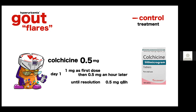For colchicine in a flare: on day one, start with two tablets of 0.5mg as the first dose. If one hour later the patient still has pain, they can take a third tablet. After that, prescribe 0.5mg (one tablet) eight-hourly until the flare resolves, which usually takes five to seven days.